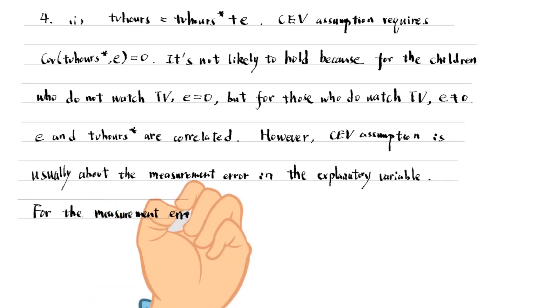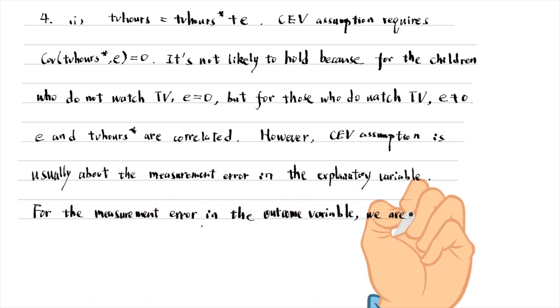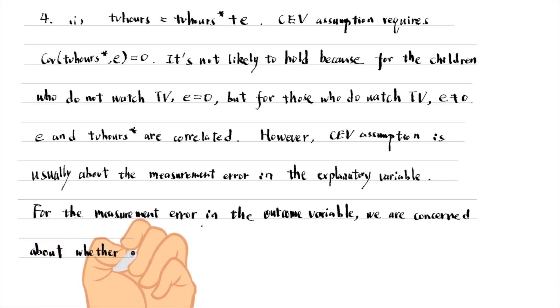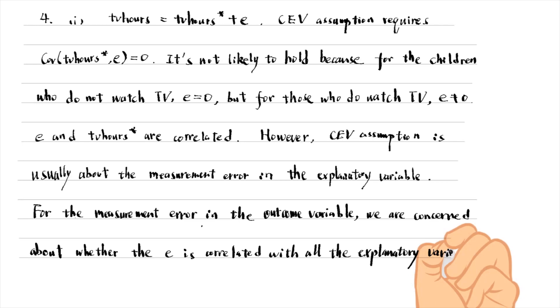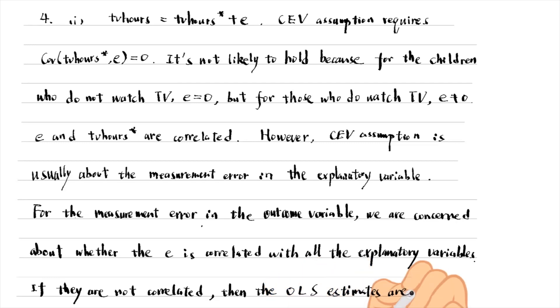If they are not correlated, then the OLS estimates are unbiased or consistent. If higher educated parents are more likely to accurately report their children's hours of TV viewing, the OLS estimates are biased.